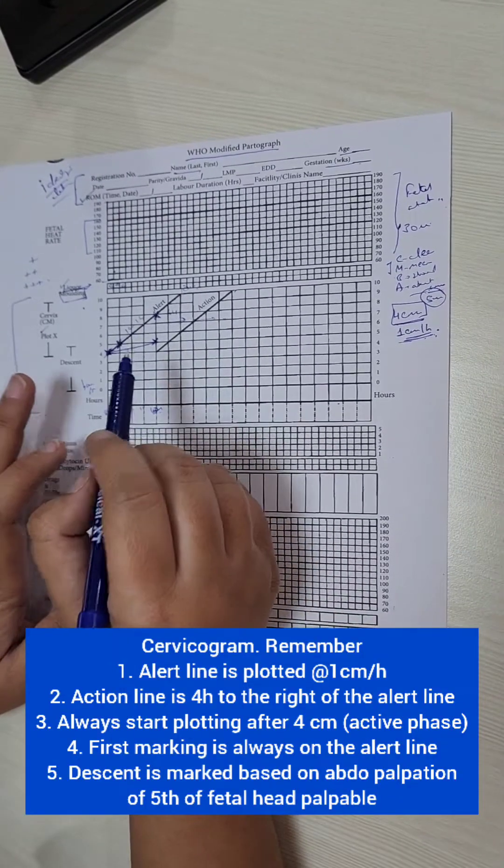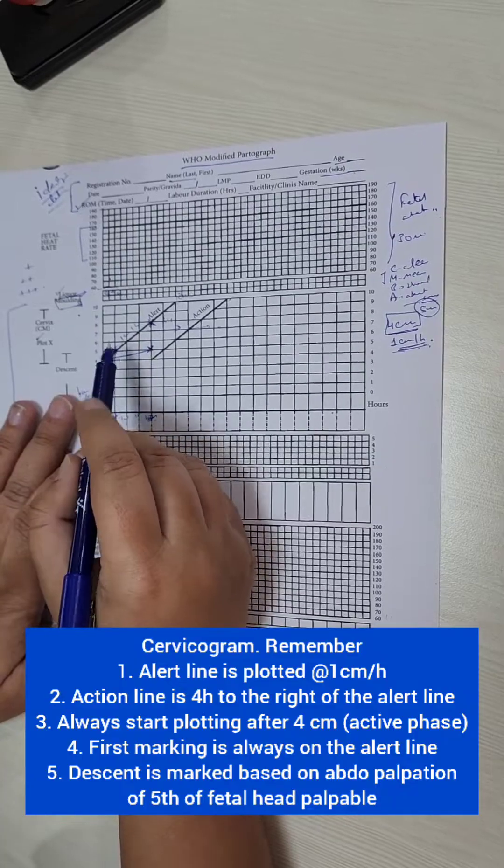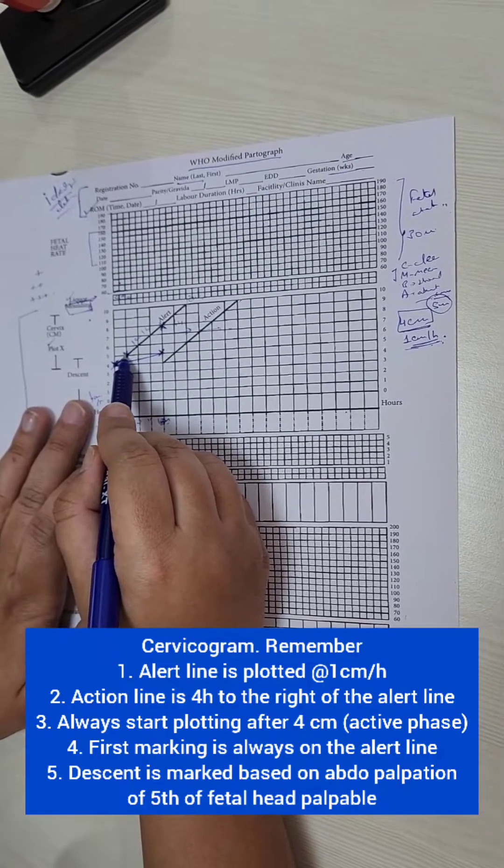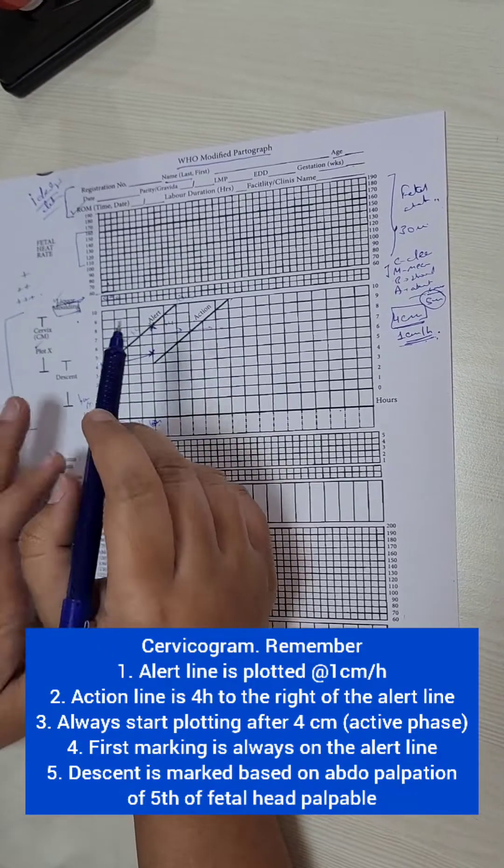So remember important points. The big square is 1 hour. We start plotting from the alert line. The partograph as such is started, we start plotting it after she is 4 centimeters dilated.